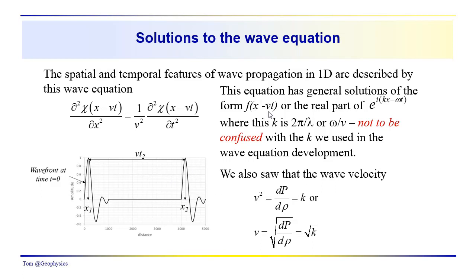This gives us a general solution of the form f(x − vt), which is just the location of the wave front or some part of the wave front along its propagation path. v would be the interval velocity, or the wave propagation velocity, and t would be the travel time.